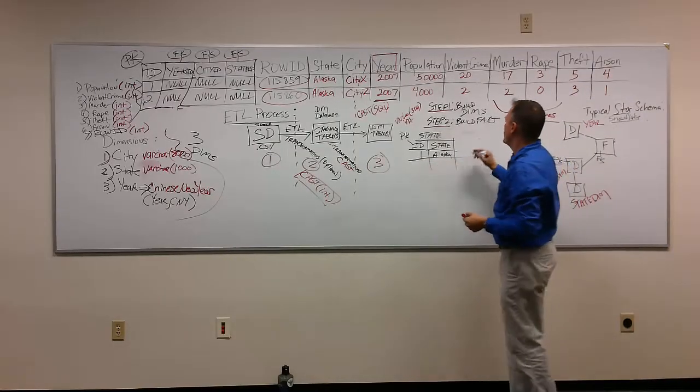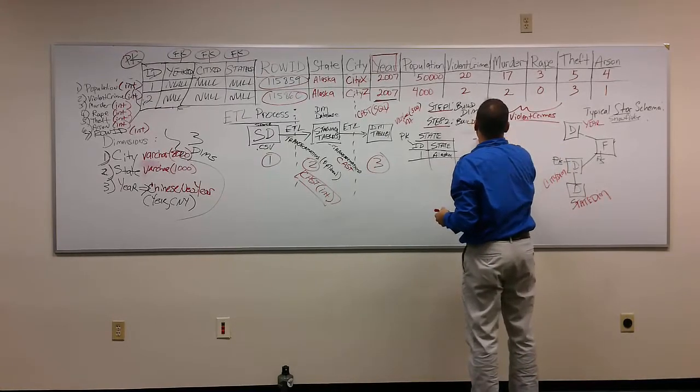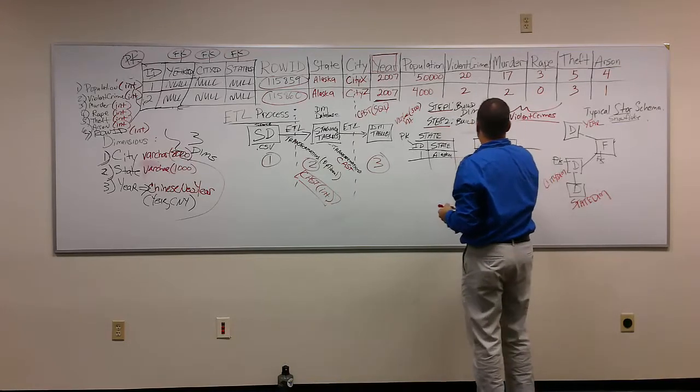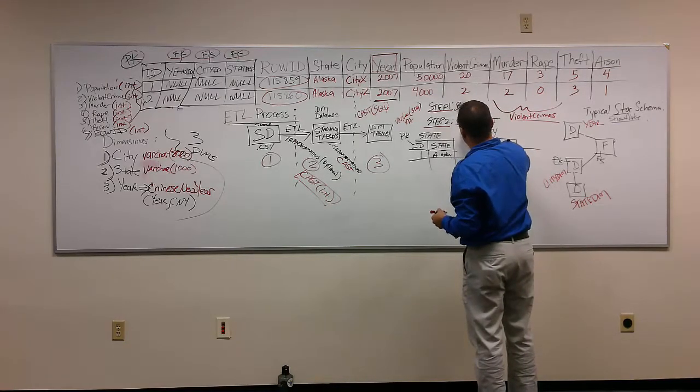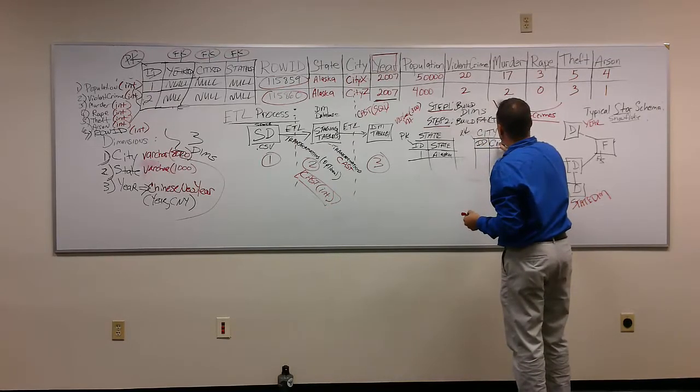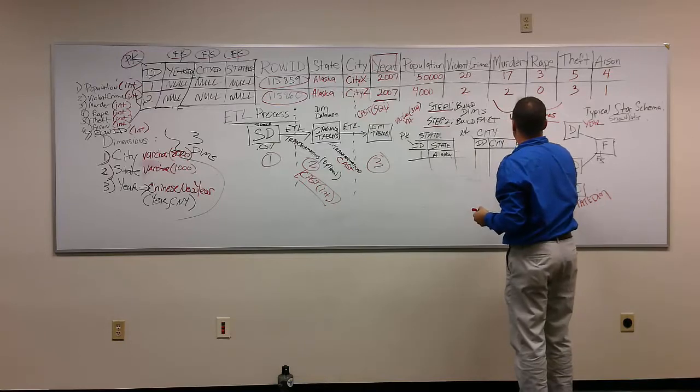Now that I've got this, I need to populate the city dimension. We said that that's going to have an ID column, which is its primary key. We said that it's going to have the city name, and then we also said that it's going to have the state ID.